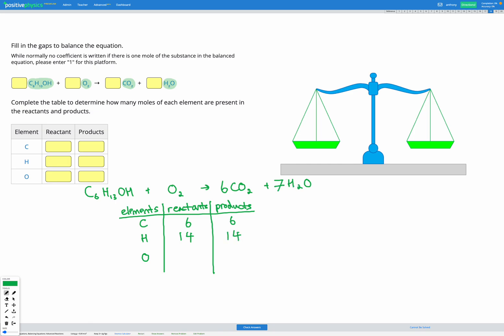Now for oxygen. I have 1, 2, 3 in my reactants, and in my products I've got 6 sets of 2 so that's 12, and I've got 7 sets of 1 so 12 plus 7 is 19. So I've got 19 oxygens in my products.